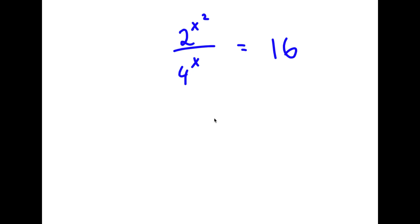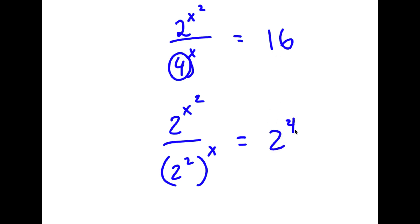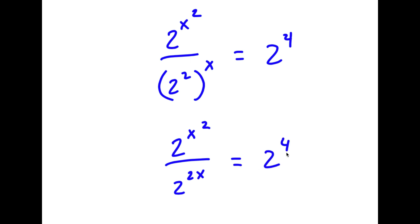So in this problem, I have 2 to the power of x squared over 4 to the power of x is equal to 16. I'm going to rewrite 4 as 2 squared, so now I have 2 to the power of x squared over 2 squared to the power of x, which equals 2 to the power of 4. This simplifies to 2 to the power of x squared over 2 to the power of 2x is equal to 2 to the power of 4.